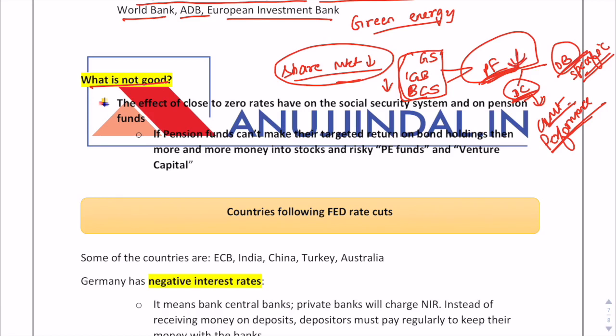If pension funds can't make the targeted return, more and more money will be invested in risky private equity funds or venture capital. This illustrates the effect of rates falling to zero on the social security system and pension funds — money gets diverted from safe investments to risky private equity and venture capital.